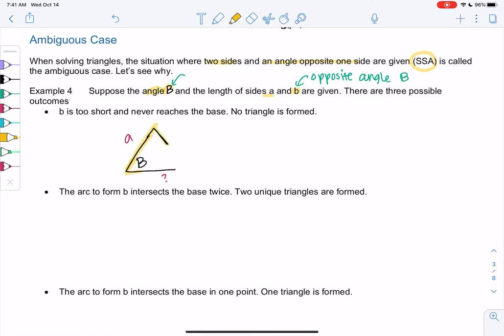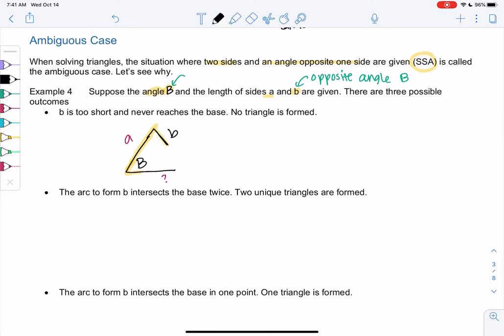So option one is B is too short and just never reaches the bottom. Right? Imagine I draw this, no matter where I draw it, it's too short, right? It's not going to reach that bottom. And so it's actually an impossible case. There's no triangle you can make. It happens with obtuse angles also. So here's angle B. I'm highlighting B because we know B. Let's say we know the length of A. We don't know the bottom length yet, but then B is only this long. So it never quite reaches the bottom, no matter where I draw it. So no triangle is formed. And so when we do the math, we'll see why it doesn't work. But visually, it's just an impossible triangle.